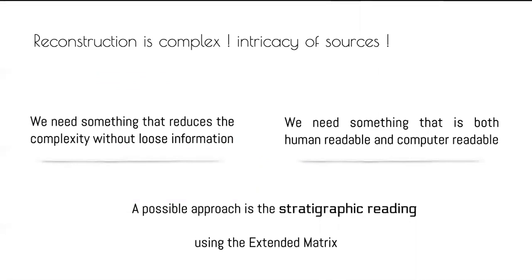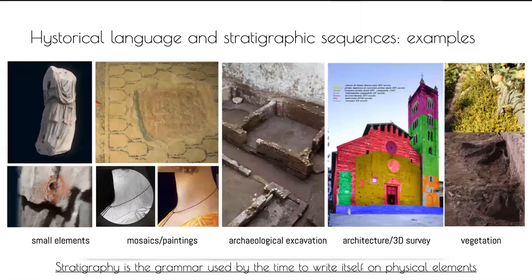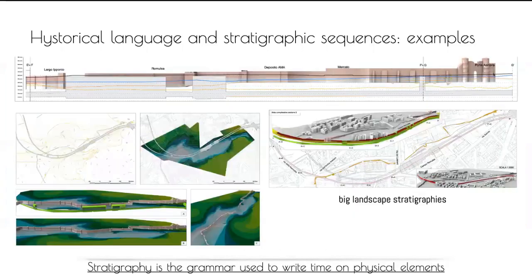We need something that reduces complexity without losing information — something both human-readable and computer-readable, usable inside a digital environment. A possible approach is the stratigraphic reading using the extended matrix. Stratigraphy is incredibly versatile: it can be applied to small elements, paintings, mosaics, excavations, building archaeology, and even large urban-scale stratigraphies. It is the grammar used by time to write itself on physical elements.